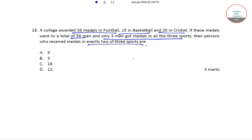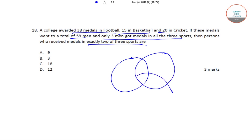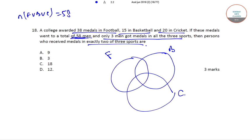Let us draw a Venn diagram. This is football, this is basketball and this is cricket. The medals went to a total of 58 men, so N(F union B union C) is equal to 58. 38 for football, so N(F) is equal to 38. This whole thing is equal to 38.